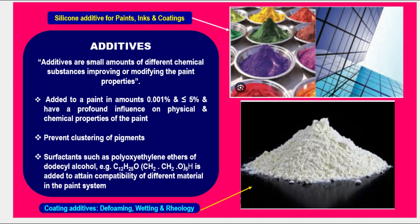Additives are small amounts of different chemical substances that improve or modify paint properties. Added to a paint in amounts from 0.001% to 5%, they have a profound influence on the physical and chemical properties of the paint. They prevent clustering of pigments. Surfactants such as polyoxyethylene ethers of dodecyl alcohol (C12H25O) are added to attain compatibility of different materials in the paint system. Figures show silicone additives for paints, inks and coatings, and coating additives for defoaming, wetting, and rheology.